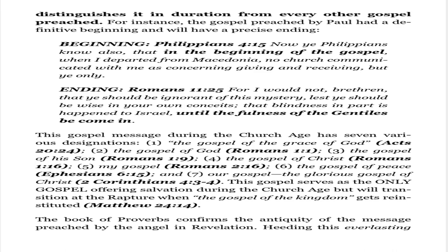This gospel message during the church age has seven various designations: (1) the gospel of the grace of God (Acts 20:24), (2) the gospel of God (Romans 1:1), (3) the gospel of His Son (Romans 1:9), (4) the gospel of Christ (Romans 1:16), (5) my gospel (Romans 2:16), (6) the gospel of peace (Ephesians 6:15), and (7) our gospel — the glorious gospel of Christ (2 Corinthians 4:3-4). This gospel serves as the only gospel offering salvation during the church age but will transition at the rapture when the gospel of the kingdom gets reinstituted (Matthew 24:14).